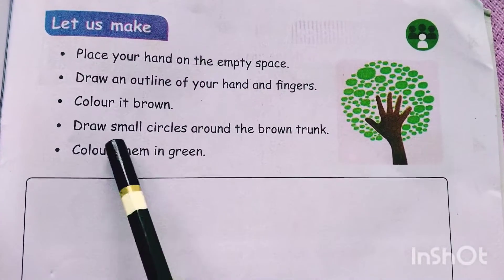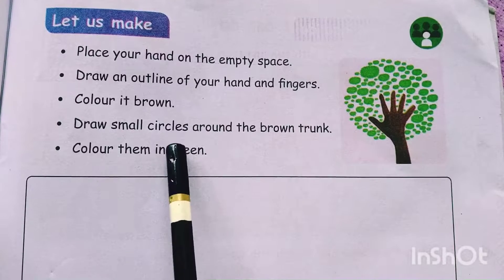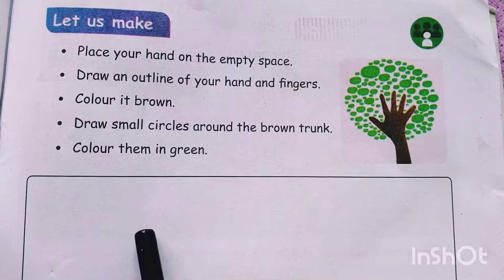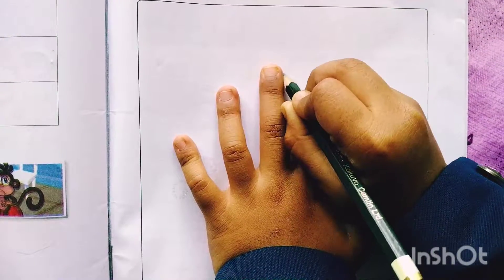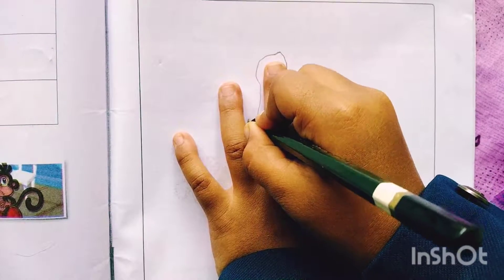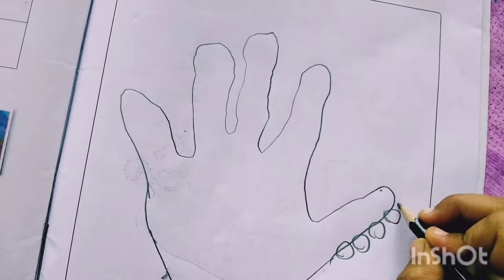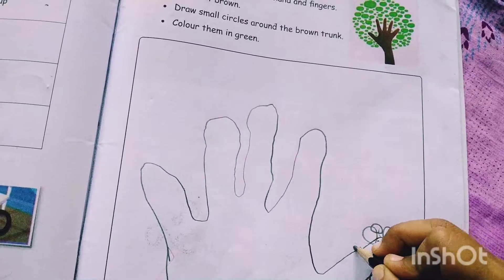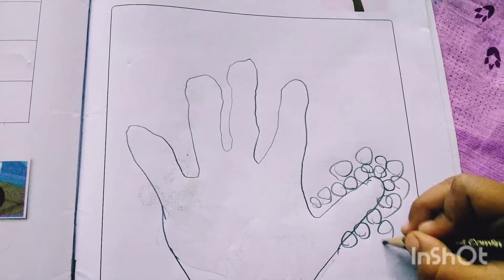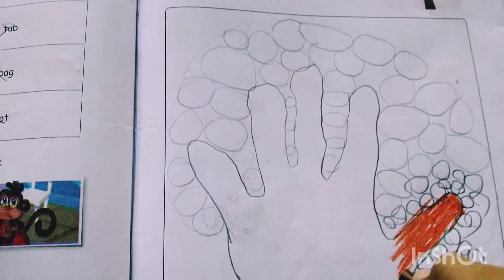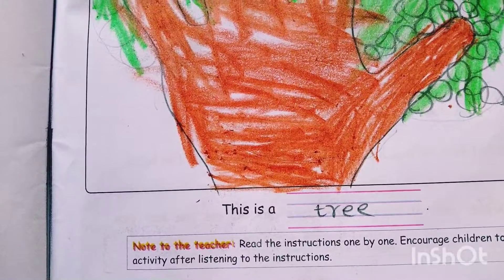Let us make. Place your hand on the empty space. Draw an outline of your hand and fingers. Color it brown. Draw small circles around the brown trunk. Color them in green. Now I am printing my hand — 1, 2. I am printing my hand. Now I'm coloring it. We finished making the tree. This is a tree.